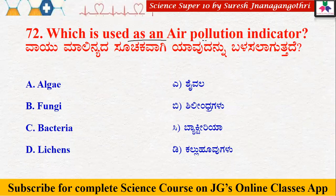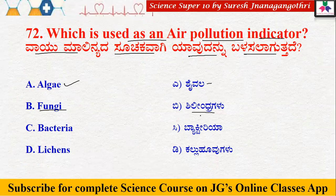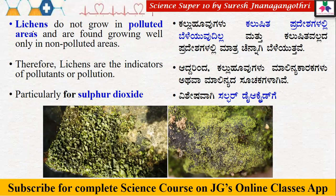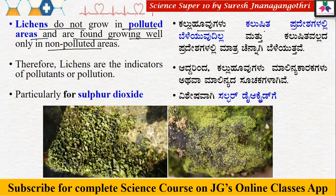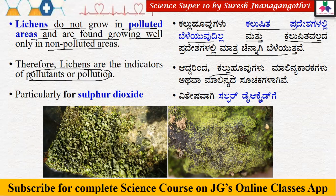The next question: which organism is used as an air pollution indicator? Options: algae, fungi, bacteria, lichens. Lichens do not grow in polluted areas and are found growing well only in non-polluted areas. Out of all pollutants, lichens are most sensitive towards sulfur dioxide. That is the reason why they are used as pollution indicators.